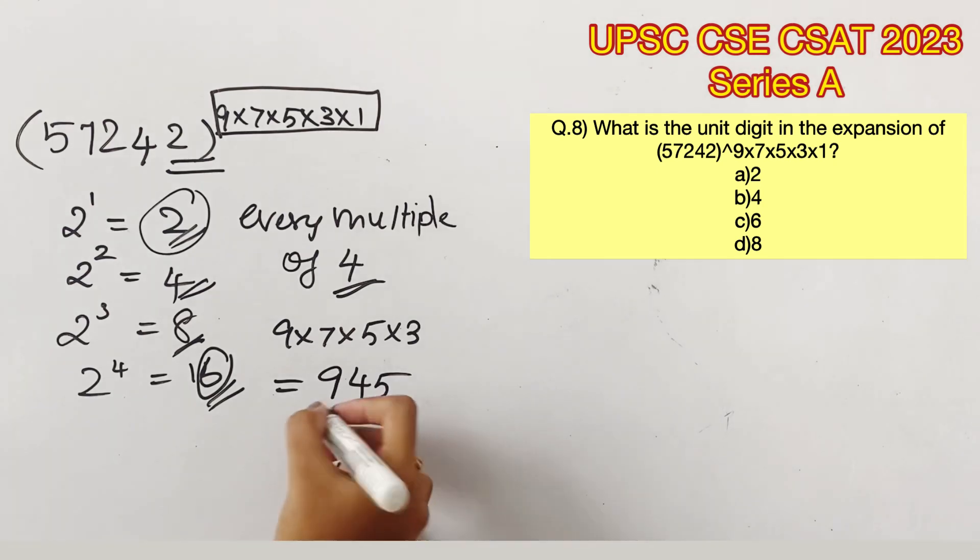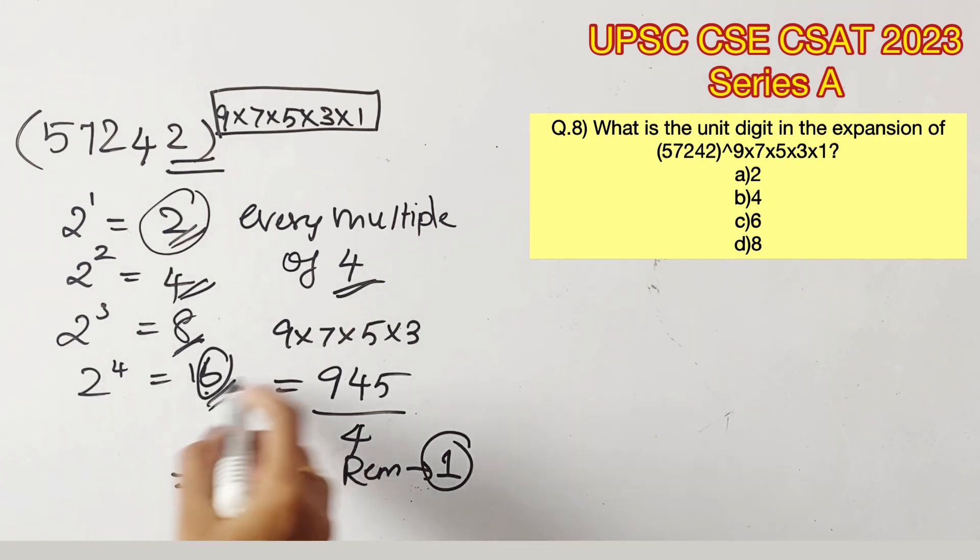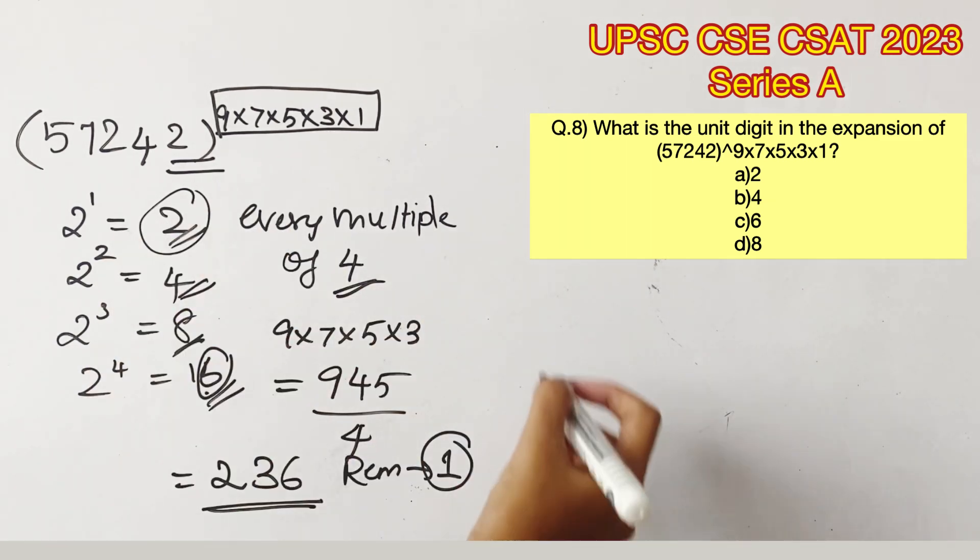Now let's divide this by 4 because we know that the pattern repeats itself for a sequence of 4. We get 236 as quotient and remainder 1, from which we can say that this pattern has repeated for 236 times and the 236th time would be a 6, which means the next one is going to be a 2.